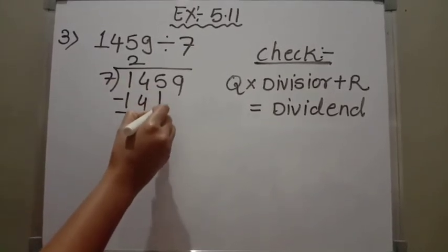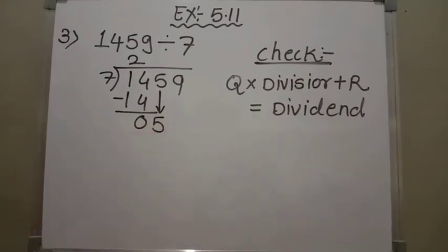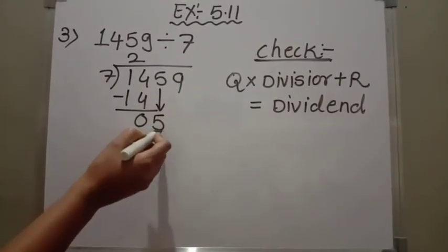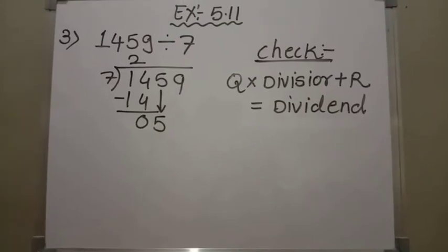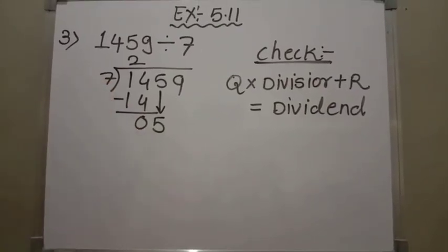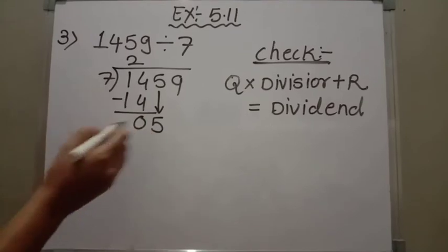Then the digit after 4, which is 5, will come down. Now let us divide 5 by 7. But the digit 5 is smaller than 7. It doesn't come in the table of 7. So how many times does 7 go into 5?